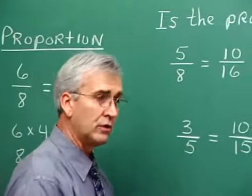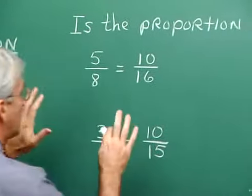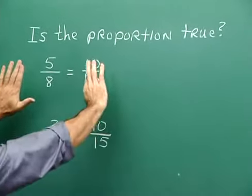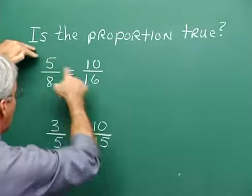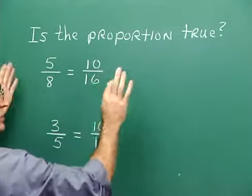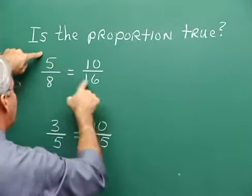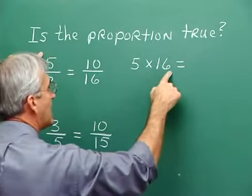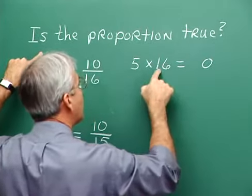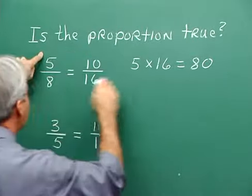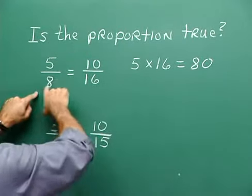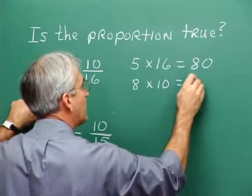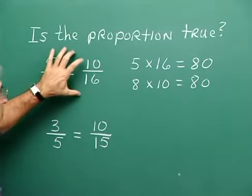Are these proportions true? To decide, we go through cross multiplication. It doesn't make any difference which product we consider first. If we go along this diagonal, five times 16 — five times six is 30, carry three; five times one is five and three is eight — so this is 80. Along the other diagonal, eight times 10 is also 80. So this is a true proportion.